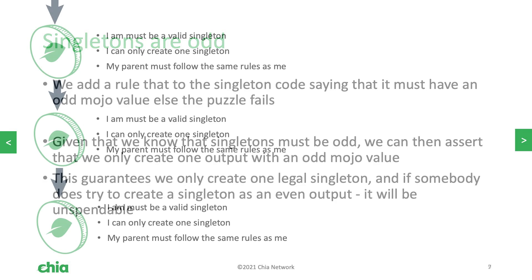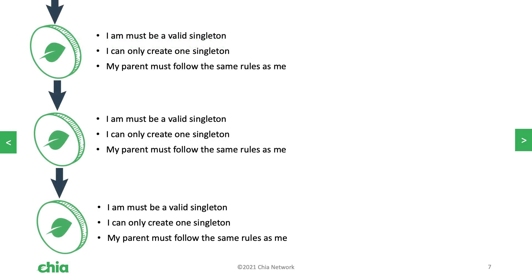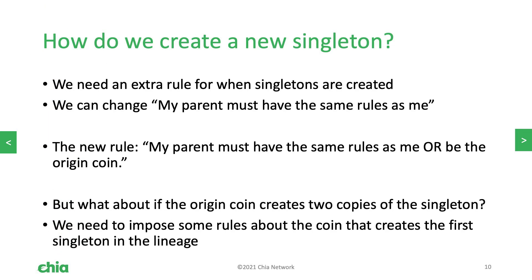That covers our three rules, but you might be wondering how all of this starts and how the launcher ID comes into this. What we can do is make a small tweak to the parent rule and change it to: my parent must have the same rules as me, or be the origin coin. This works really nicely, but if we're being thorough we must make sure the origin coin is not creating more than one of these singletons, otherwise we might have a duplicate on the network.